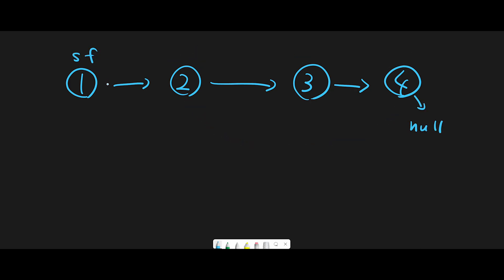Let's think about the false case — that means we don't have a circle in the linked list. We do the same thing. Slow pointer moves once and fast pointer moves twice. And again, slow pointer moves once and fast pointer moves twice. Now the fast pointer reaches a null node and there is no way to reach any further node. That means we don't have a circle, so in that case we should return false.